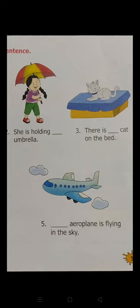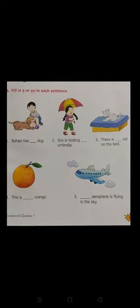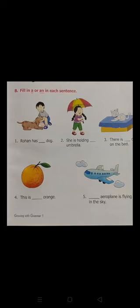Children, we will fill in 'a' there. There is a cat on the bed. 'C' is a consonant. I told you that A, E, I, O, U are vowels and the remaining letters are consonants. So 'C' is a consonant, we will fill in 'a'. There is a cat on the bed.